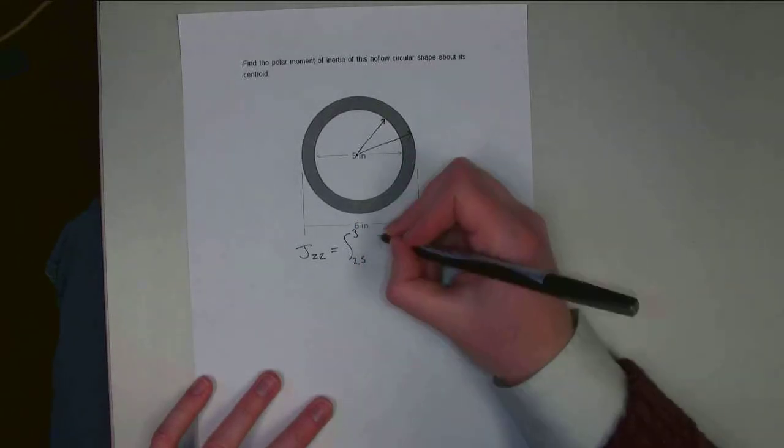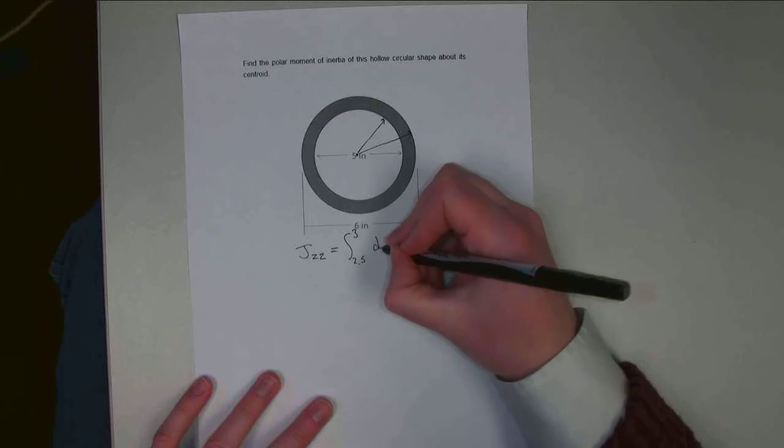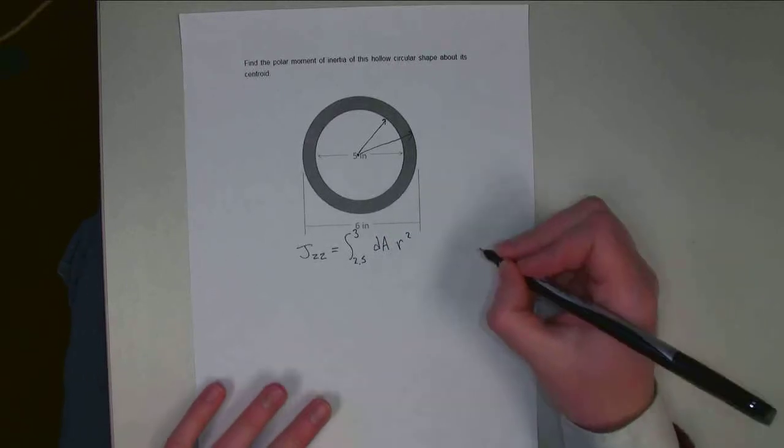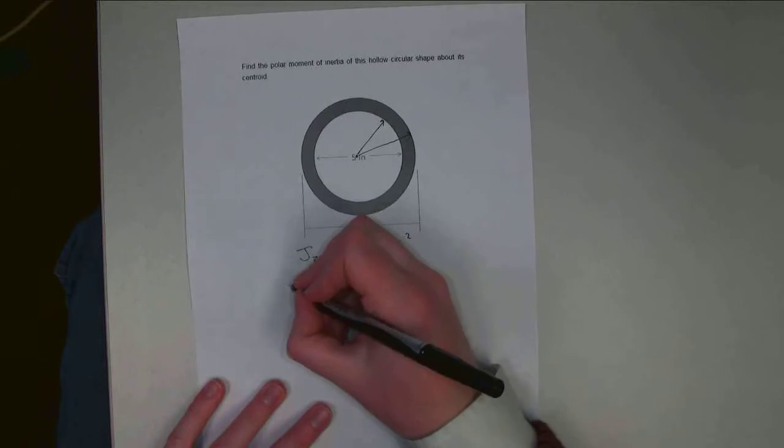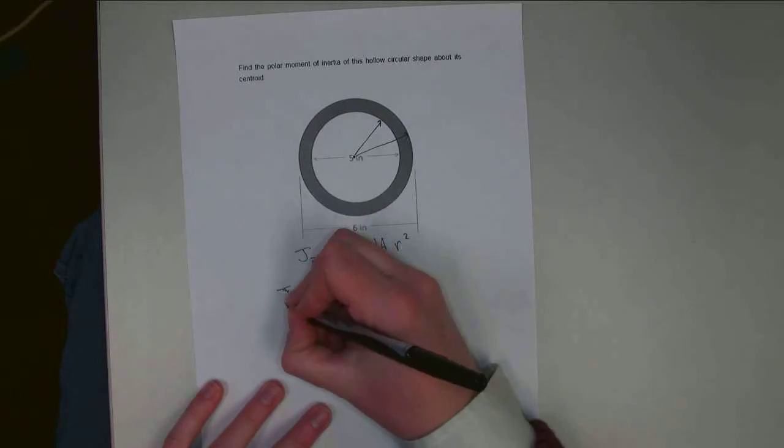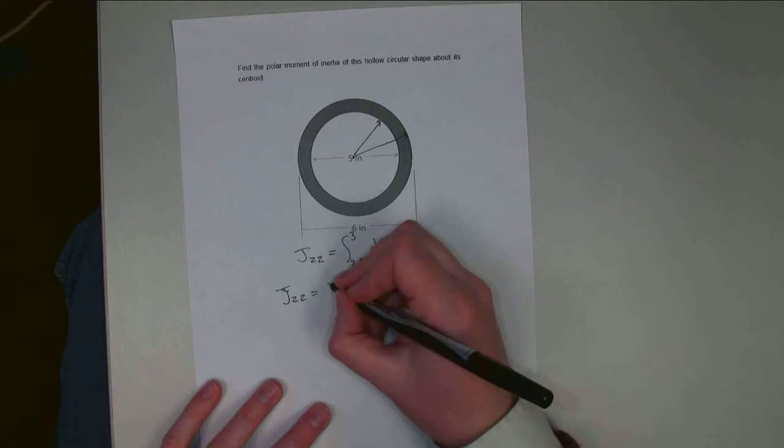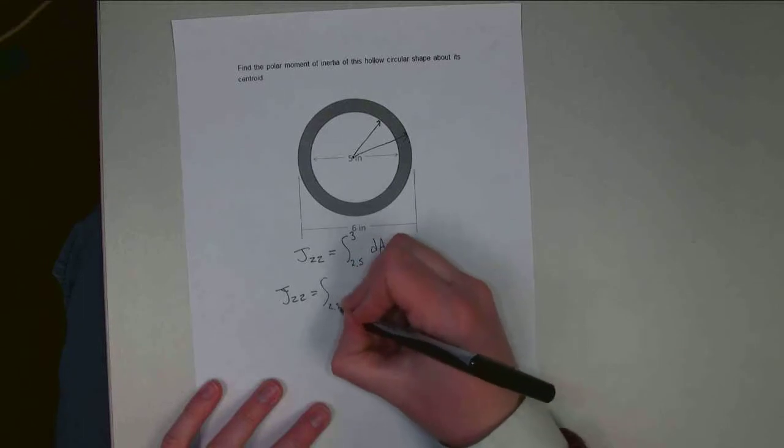And I'm going to take the integral of dA times r squared. So Jzz can be equal to the integral from 2.5 out to 3.